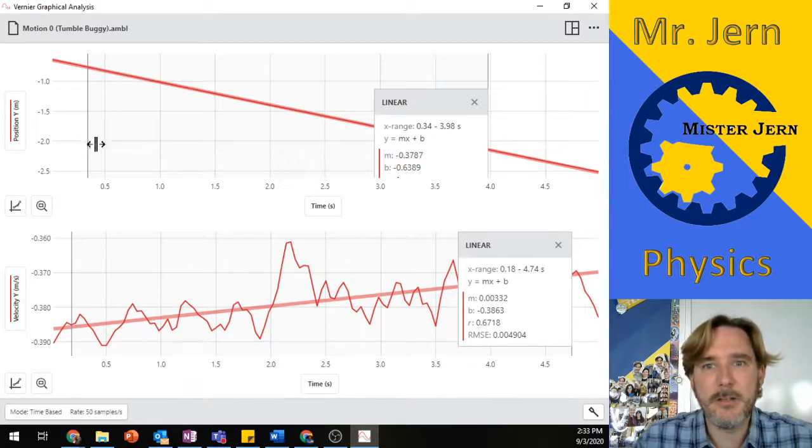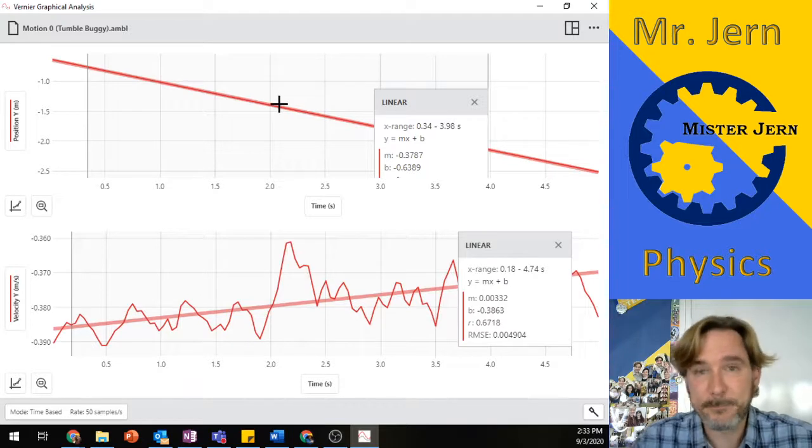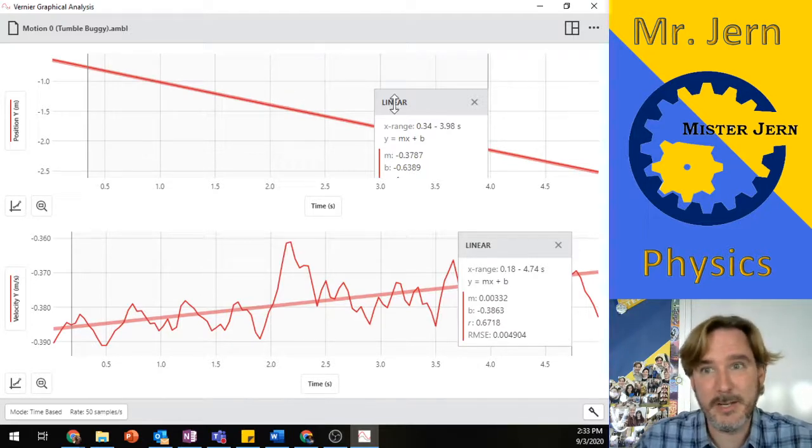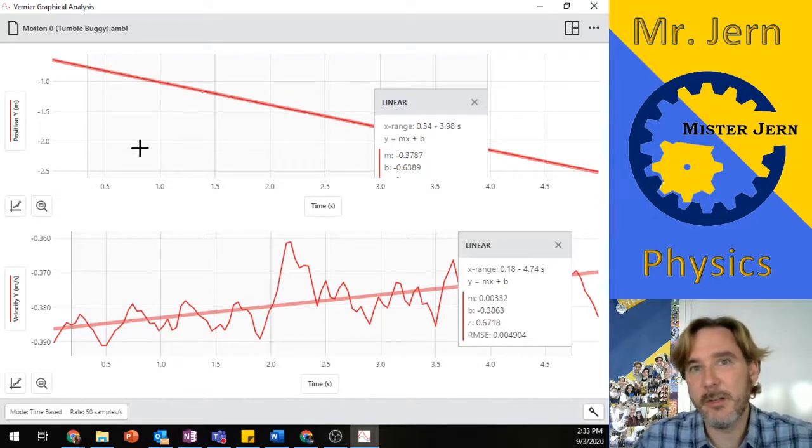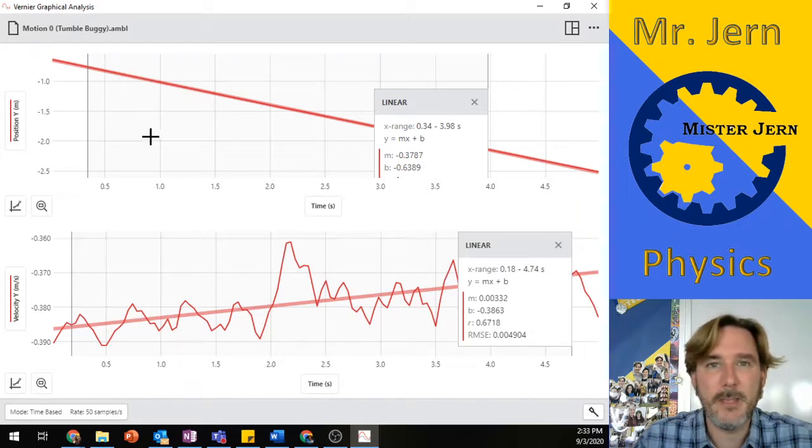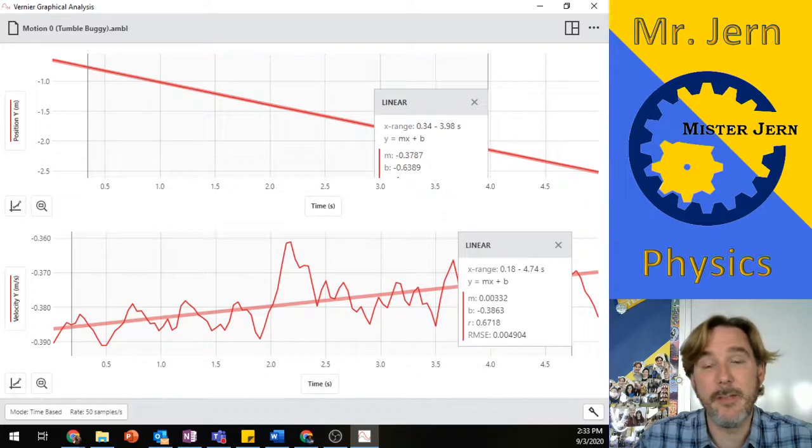This range is a lot bigger. You could see there's a lot more change. This looks like a pretty easy graph, but this is, again, a tumble buggy which is going at a constant speed. So things are going to look a little bit different when you open up the graphs for when things are speeding up or slowing down or doing different things. So that's how you do it. Find the slope and let me know if I can help you.